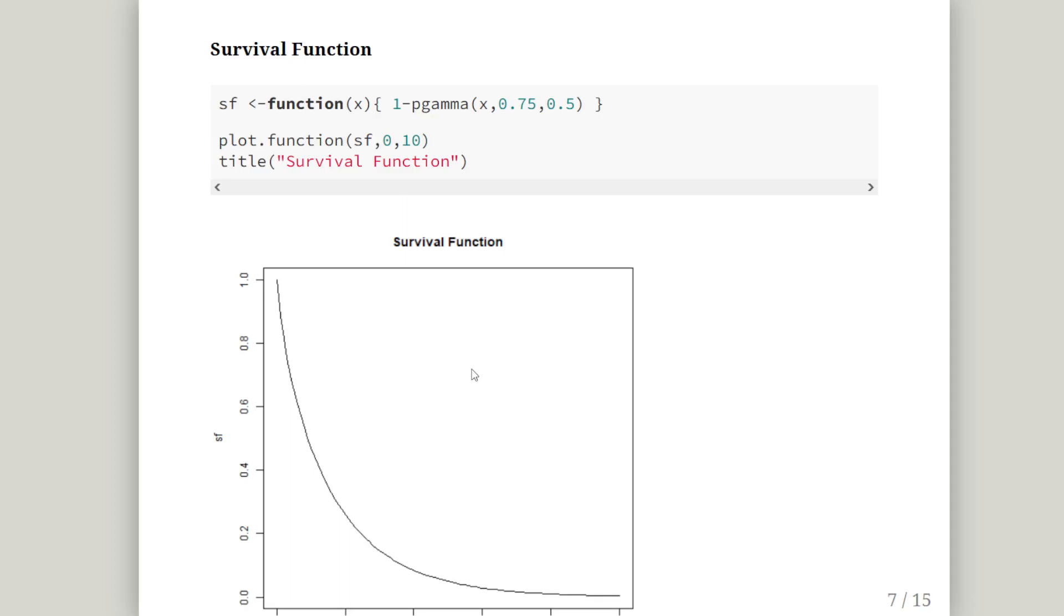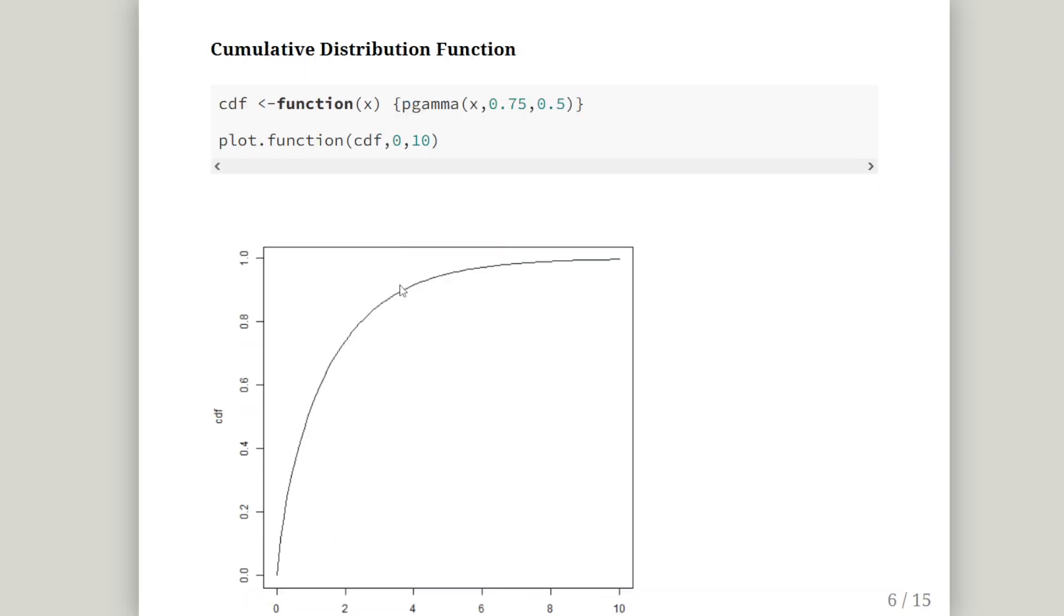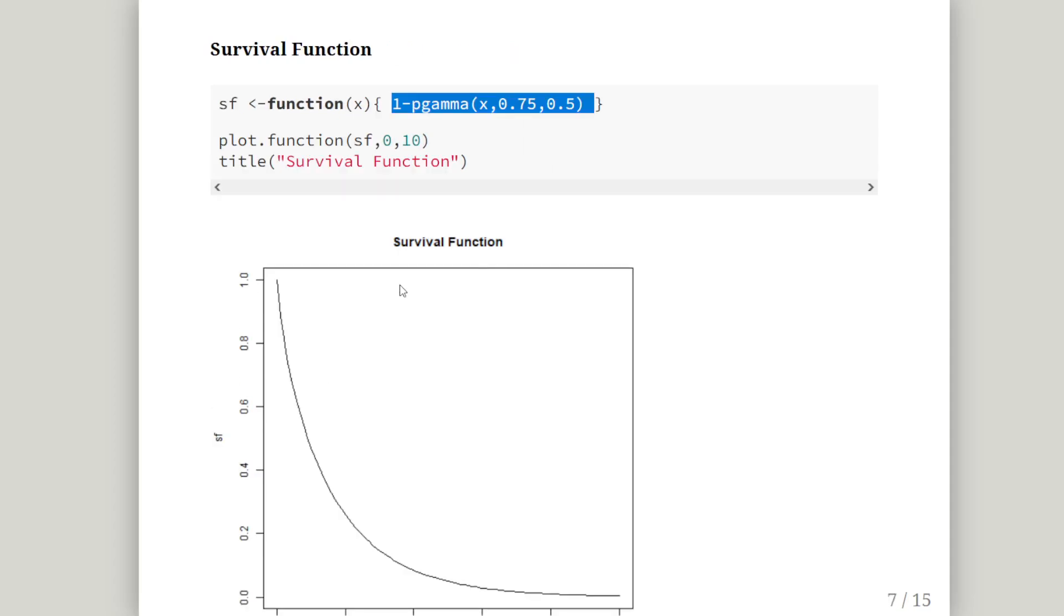Let's up the ante a bit. The survival function, SF. So it's 1 minus the P gamma. Just as we've done before. We're going to give it a title there - Survival function. So this is the complement of that, almost like the dovetail of it. That's our survival function.